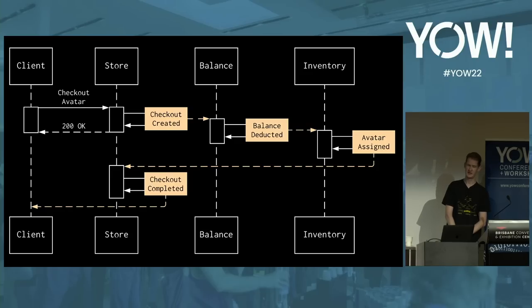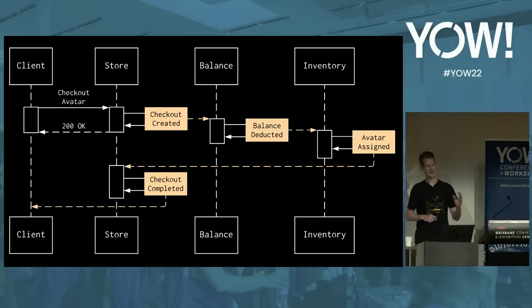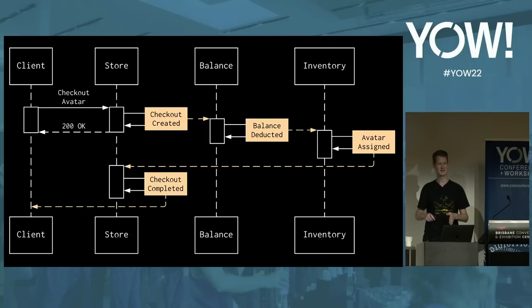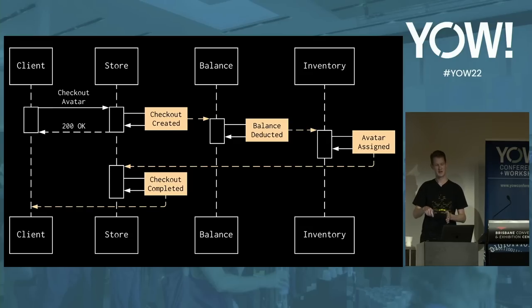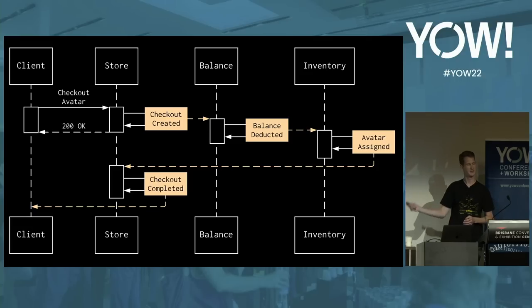Choreography might look like this in our workflow. The workflow sequence is distributed to each of the participants, who communicate through events. The store receives a checkout request from the client. When this happens, it raises a 'checkout created' event. The balance service is waiting for that event, and when it gets one, the balance is deducted and a 'balance deducted' event is produced. Inventory is waiting for that event, and when it gets one, it assigns the avatar and produces the 'avatar assigned' event. Then we go back to the store, which is waiting for that event, and informs the client that checkout is complete.